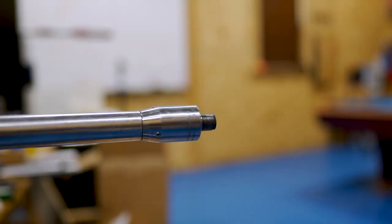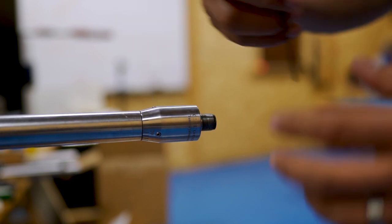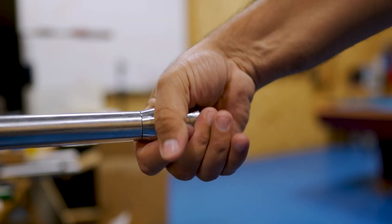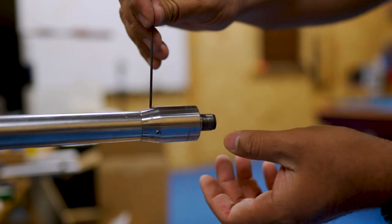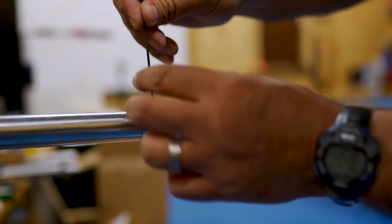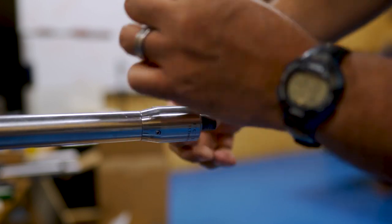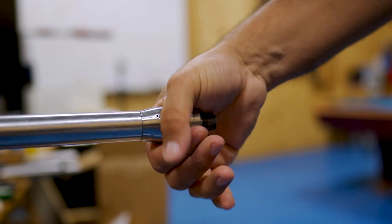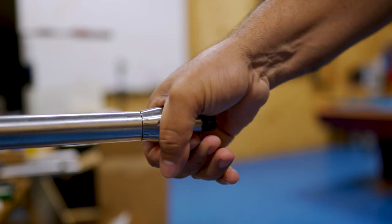The way you want to set those screws up, you want to tighten them enough that it provides enough tension so that the tuner will not turn on its own. However, it still allows you to turn it if you need to out in the field.